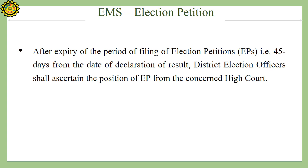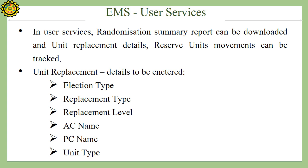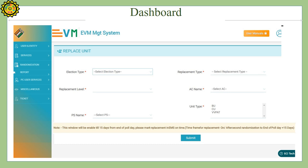Marking of Election Petition: After expiry of the period for filing election petitions — i.e., 45 days from the date of declaration of result — the district election officer shall ascertain the position of the election petition from the concerned High Court. Login is done at the CEO end and necessary steps are followed. In user services, randomization summary reports can be downloaded, and unit replacement details and reserve unit movements can be tracked. For unit replacement, details to be entered include election type, replacement type, replacement level, AC name, PC name, and unit type.